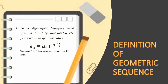The formula is a sub n is equal to a sub 1 times r raised to n minus 1, where a sub 1 is the first term and r is the common ratio. In arithmetic sequence, r is known as the common difference, while here in geometric sequence, r is the common ratio. We can find the common ratio by dividing a term by its previous term.